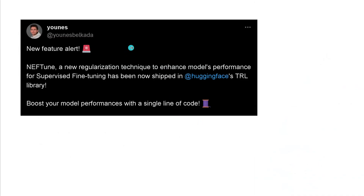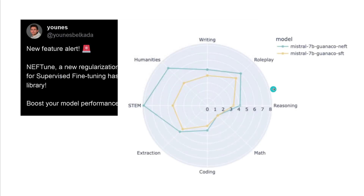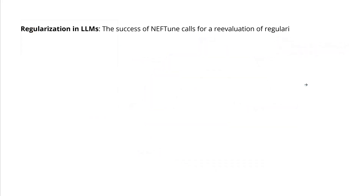Jones Balcada announced a new feature on Hugging Face — NEFT has now been included. He shows that training Mistral 7B on a Guanaco dataset with classical supervised fine-tuning gives one level of performance in orange, but with Guanaco NEFT fine-tuning the performance increase is really significant. And we can do this with one line of code, thanks to the Hugging Face team who implemented this.